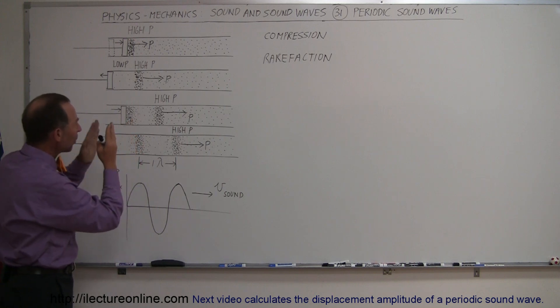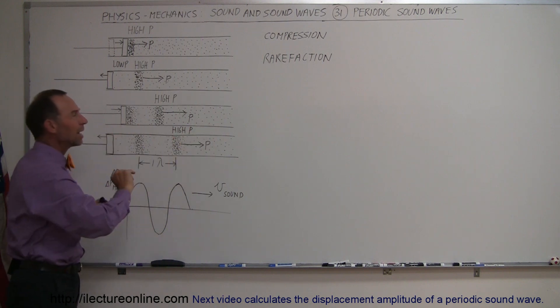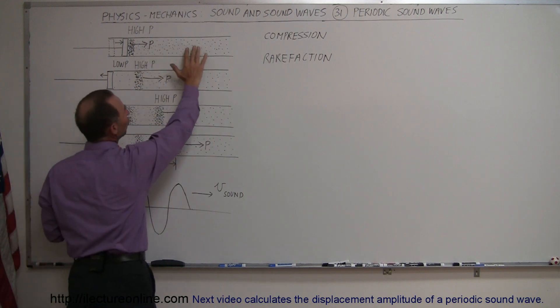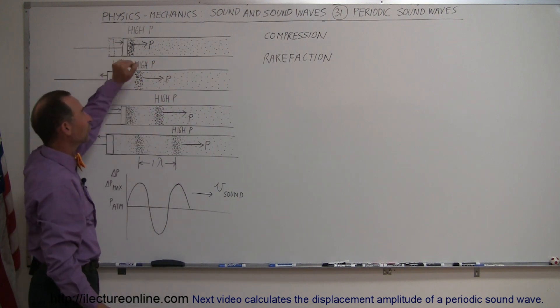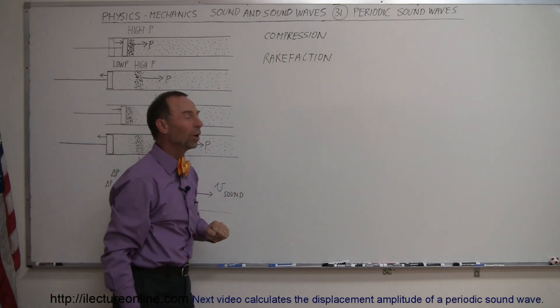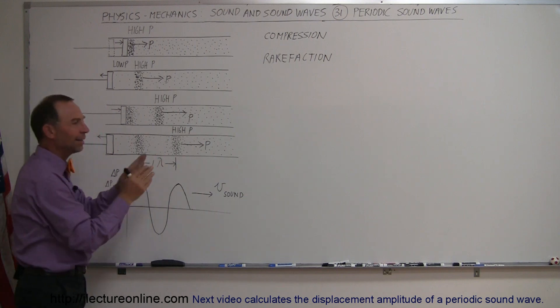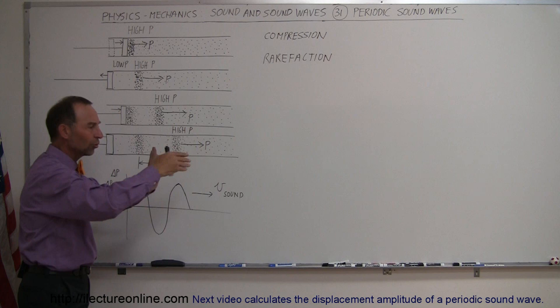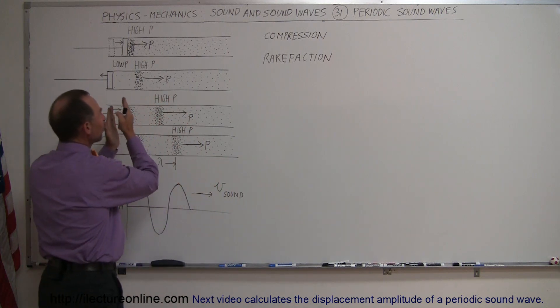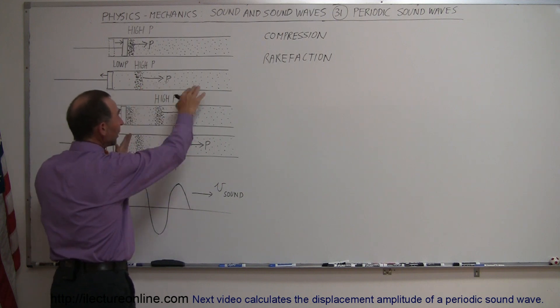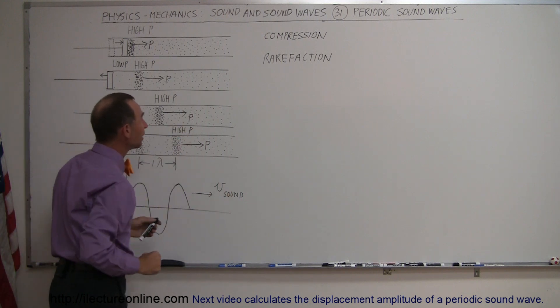When air molecules are compressed together like they are here, that compression will then continue through the air. Here we have normal air pressure, atmospheric pressure, and here we have pressure higher than atmospheric pressure, so we call that the high pressure point, a compression region in the wave. This compression continues through the air, and the rate at which they do that is the speed of sound.